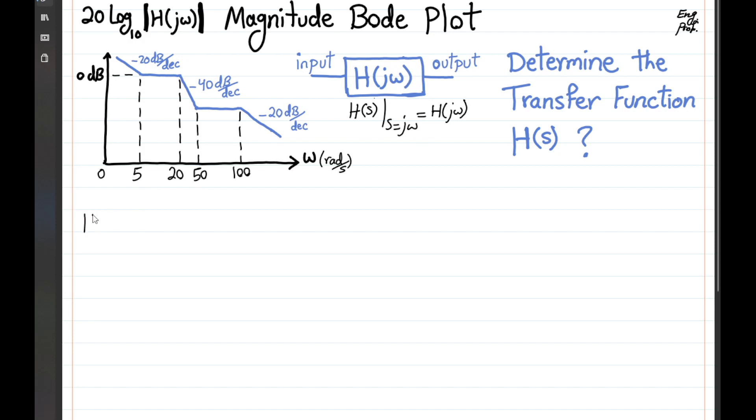We know that h of j omega equals a bunch of poles and zeros. Since we are dropping constantly with a slope of 20 dB per decade from 0 frequency up to 5, we should have a j omega as a pole in the system. But when we hit 5, as we are increasing the frequency on the x-axis, then there is a counteracting zero